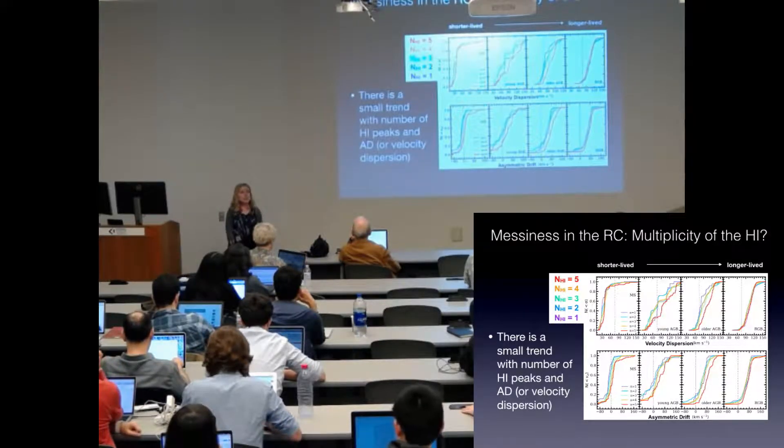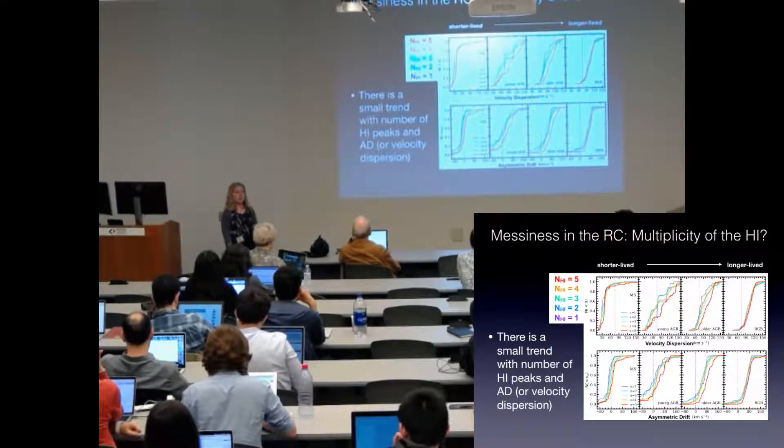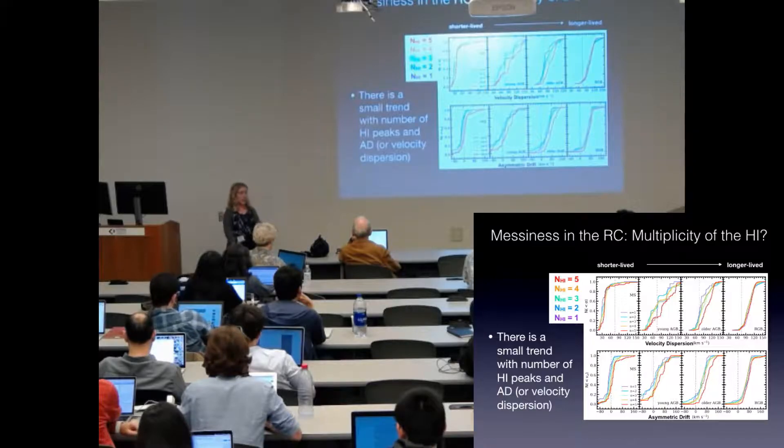However, you still see that with all line of sight complexity, there is an increase in velocity dispersion and asymmetric drift with stellar age. So despite this trend, we're still seeing that asymmetric drift is a function of stellar age.